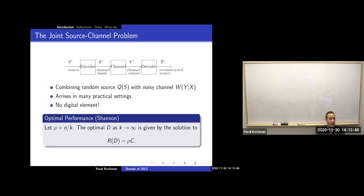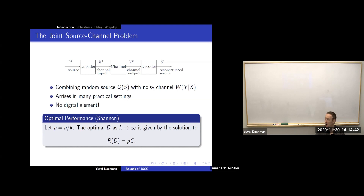In the joint source-channel problem, I have K source samples and N channel uses, with an encoder and decoder, and I want to reconstruct the source at the decoder. Notably, there is no rate in this formulation — no bits at all. The encoder is any function from source sequences of length K to channel inputs of length N. Think of taking a photo on your phone and sending it: I have pixels as input, pixels at output, and a wireless channel in between — everything is real numbers, nothing digital in the problem formulation.